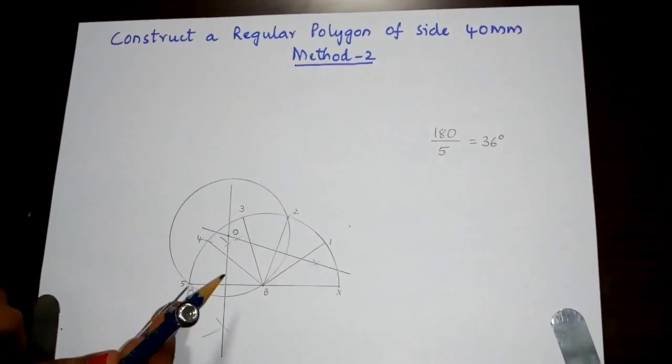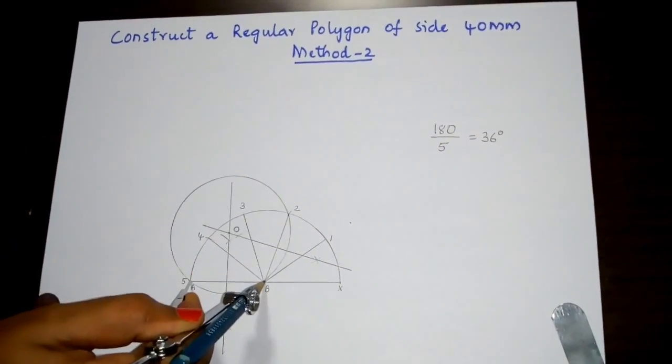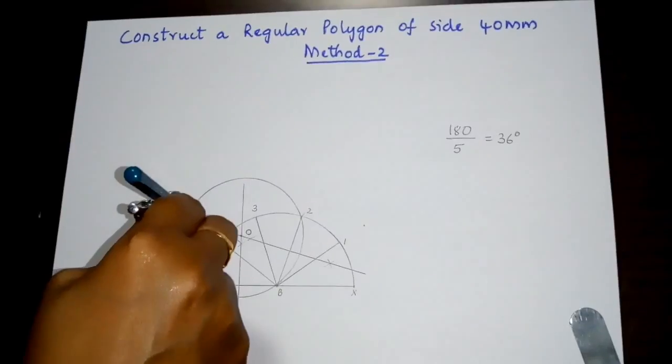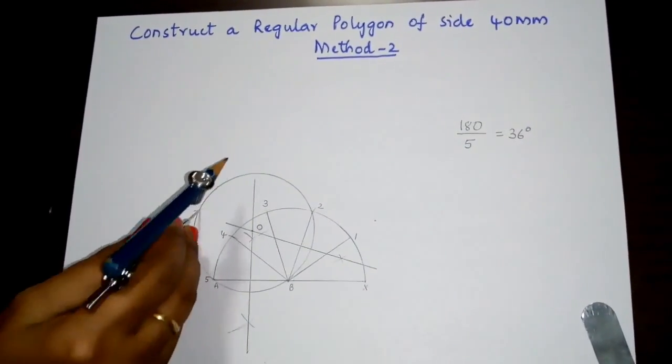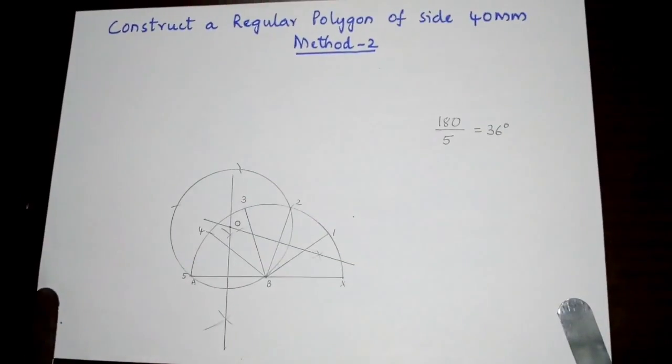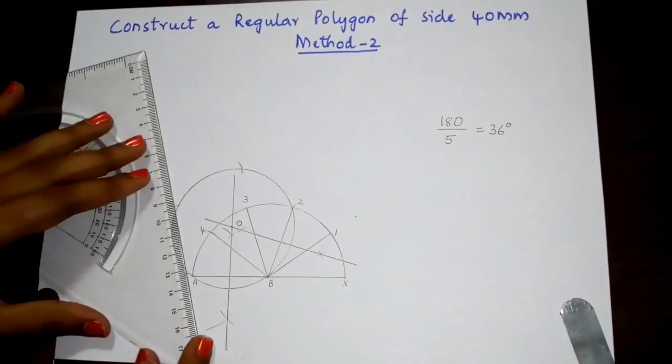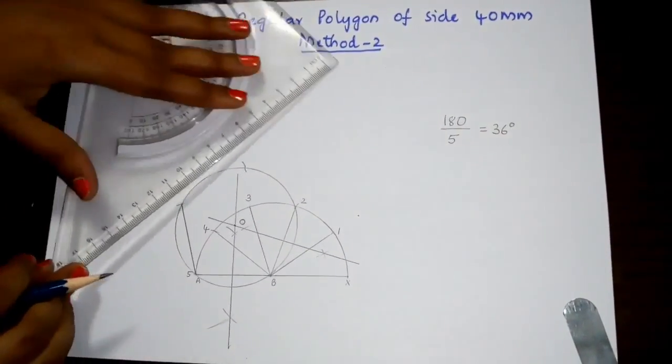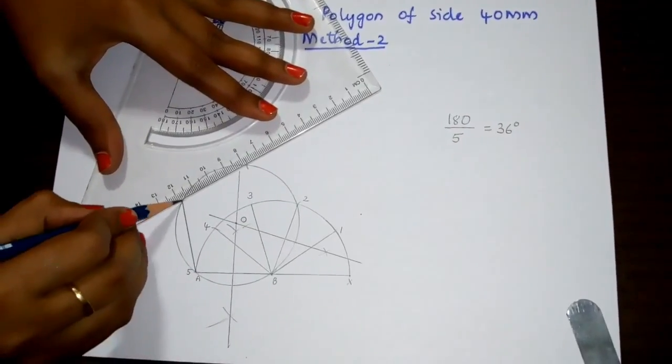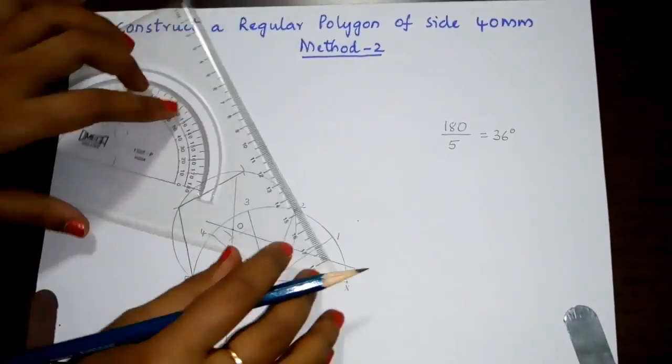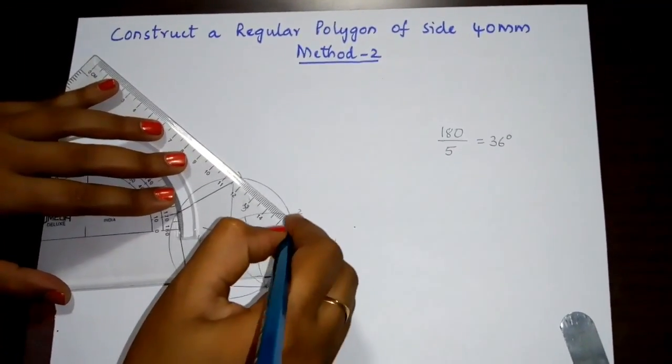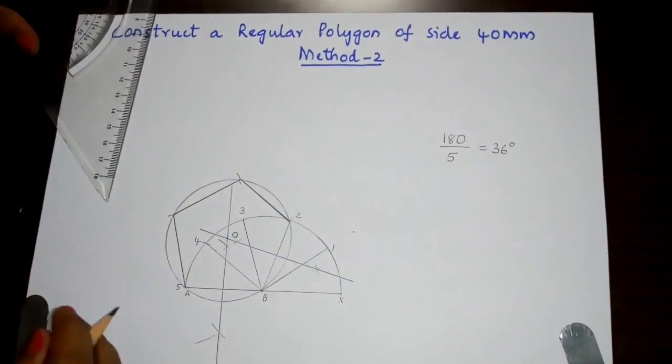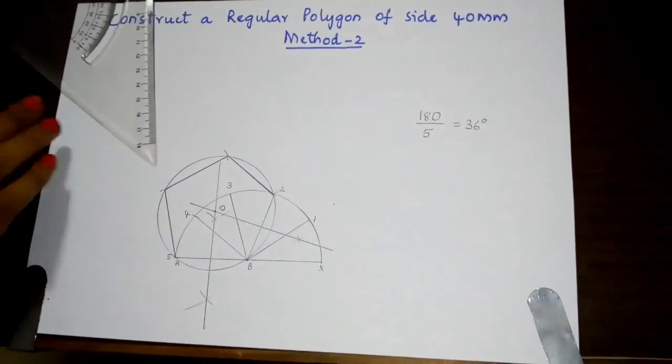Measure the value of AB. After measuring, place this value onto the circle. Now join the arcs which we have marked onto the circle.